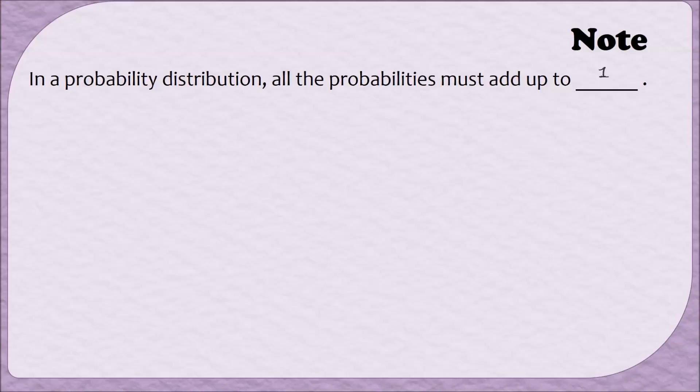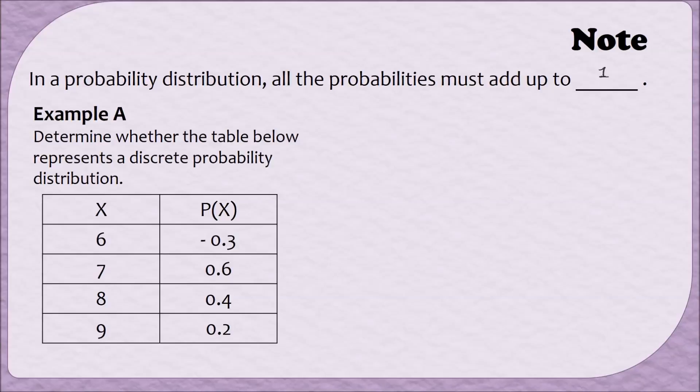So let's do an example of identifying whether a table is a probability distribution or not. In this example, we need to determine whether the table below represents a discrete probability distribution. Take a moment and see if you can answer this question. Does this table represent a discrete probability distribution? The answer to that question is no.